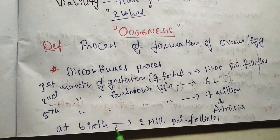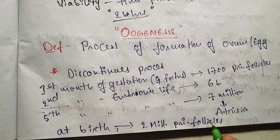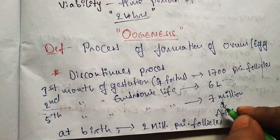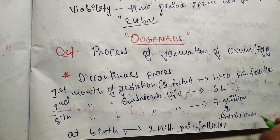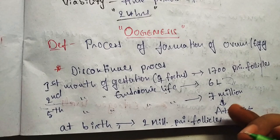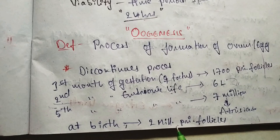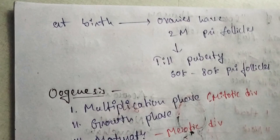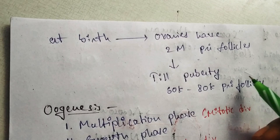At birth, the gestation period is complete. These primary follicles undergo atresia, meaning a reduction in their number through degeneration. So from 7 million, numbers decrease through degeneration. At the time of birth, 2 million primary follicles are present in the female.